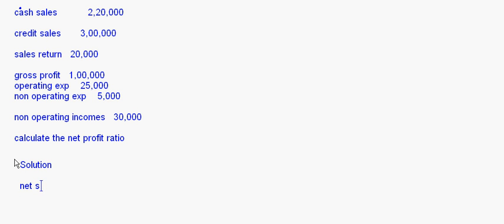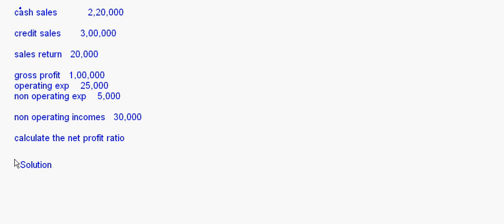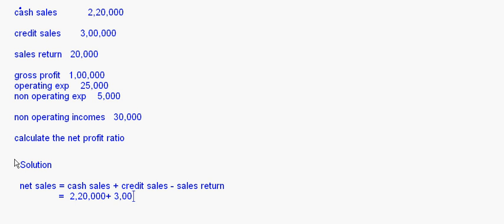First of all, calculate the net sales. Net sales will be cash sales plus credit sales minus sales return. So this comes to two lakh twenty thousand plus three lakhs minus twenty thousand, which equals five lakhs.